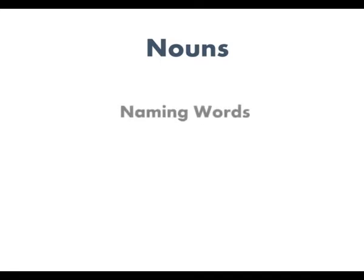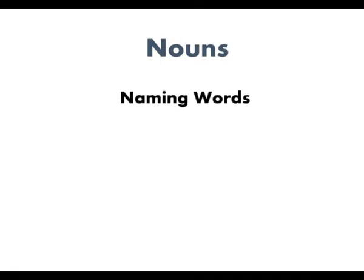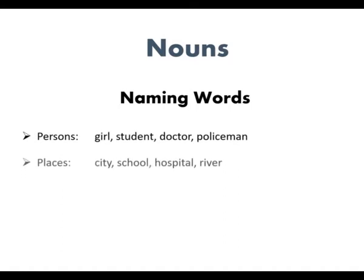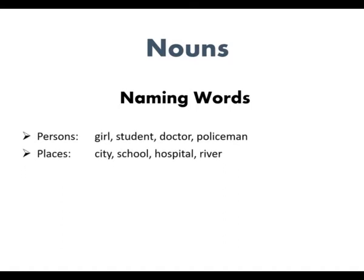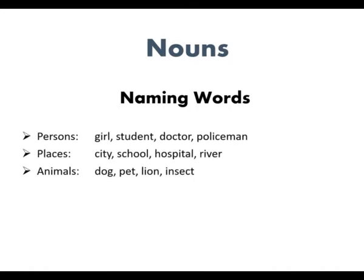Students, before we learn about concrete, abstract and collective nouns, let's see this word: nouns. Nouns are naming words. They can name persons, places, animals and things.